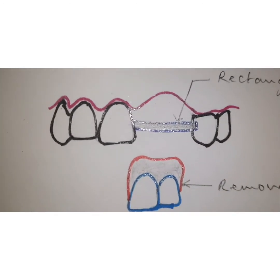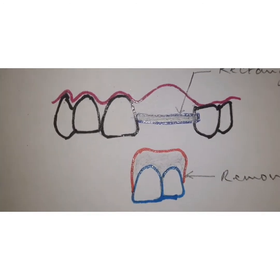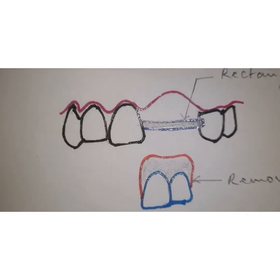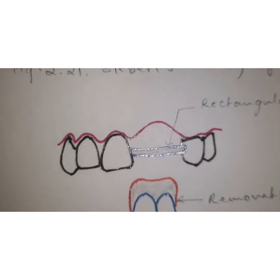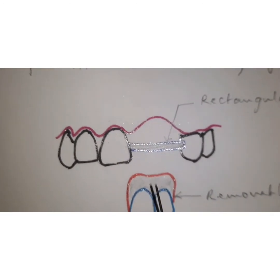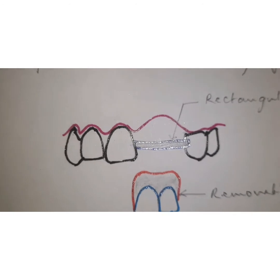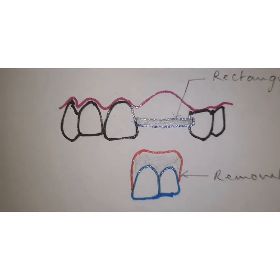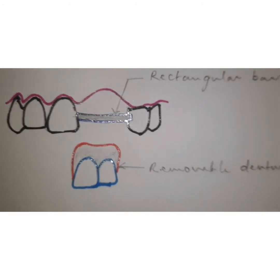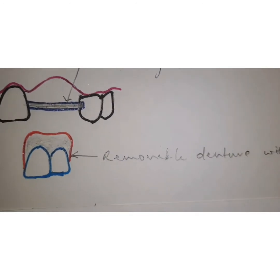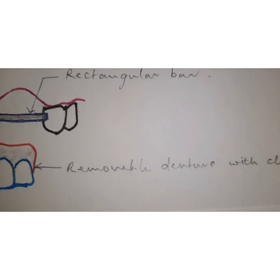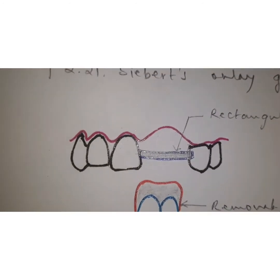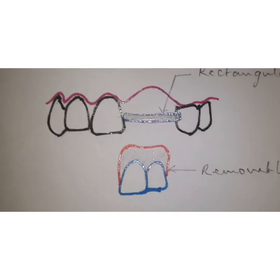For the other part, you are going to fabricate a removable denture which will be clipped onto the rectangular bar. So you have the rectangular bar as the fixed component, and the removable denture with a clip which will be clipped onto the rectangular bar.